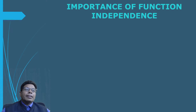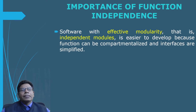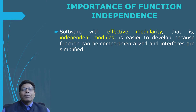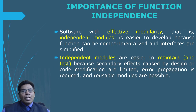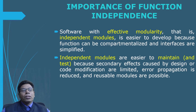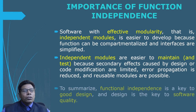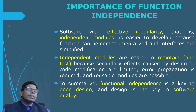Now let us look at the importance of functional independence. Software with effective modularity — that is, independent modules — is easier to develop because functions can be compartmentalized and interfaces are simplified. Independent modules are also easier to maintain and test because secondary effects caused by design or code modifications are limited, error propagation is reduced, and reusable modules are possible. To summarize, functional independence is a key to good design, and design is the key to software quality.